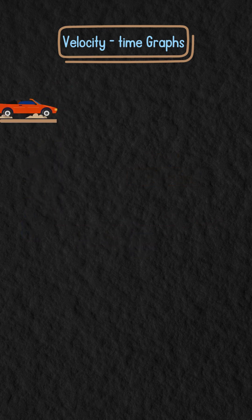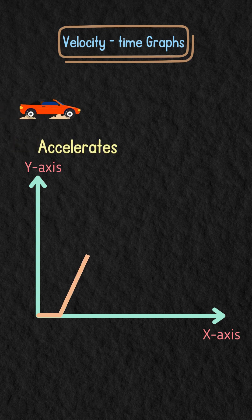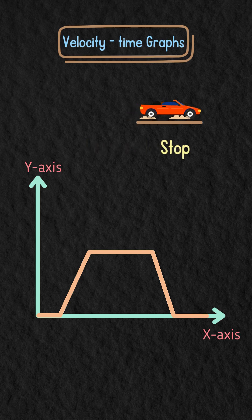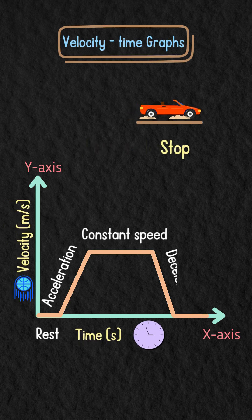Let's take a car, for example. It starts from rest, accelerates, moves at a constant speed, then decelerates, and stops. The velocity time graph will show these phases with distinct slopes.